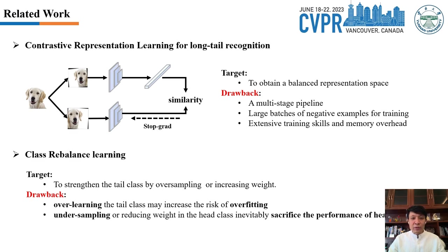The related work mainly involves two aspects. For contrastive representation learning, the goal is to enhance representation learning to obtain a balanced representation space. However, previous approaches require multiple stage pipelines and large batches of negative sampling for training. As for class rebalancing learning, previous approaches aim to strengthen tail classes by oversampling or increasing their weight during training. However, overlearning the tail classes may increase the risk of overfitting, while undersampling or reducing weight in the head class sacrifices the performance of those classes.